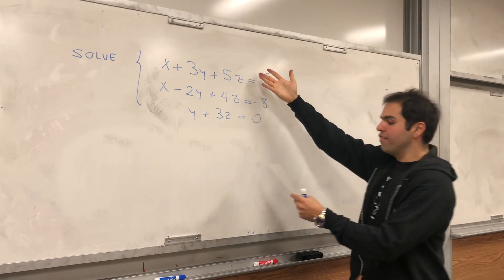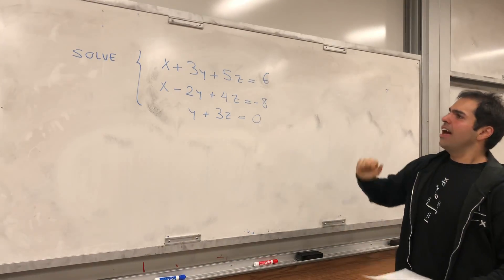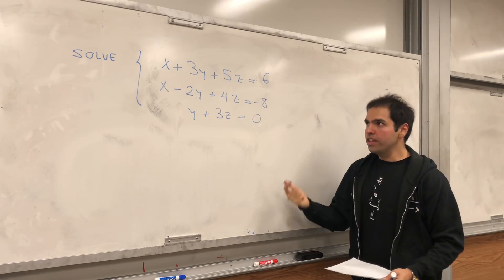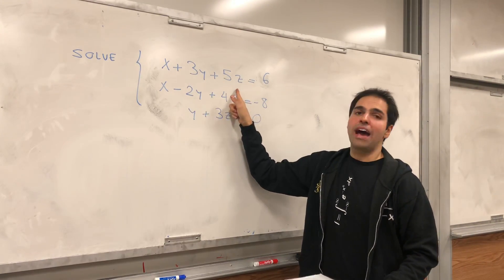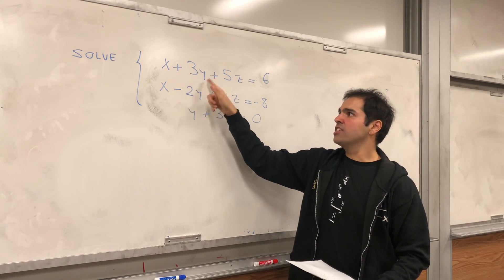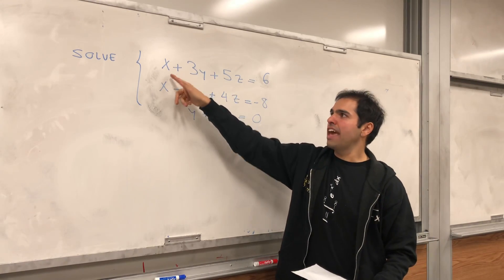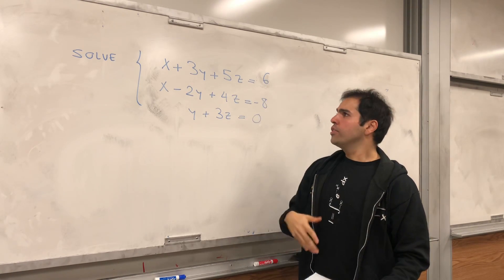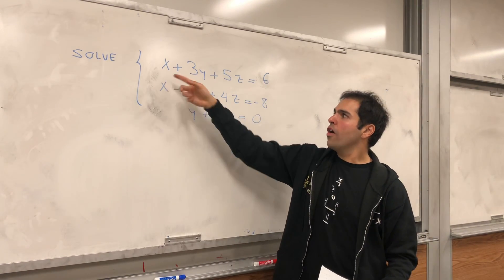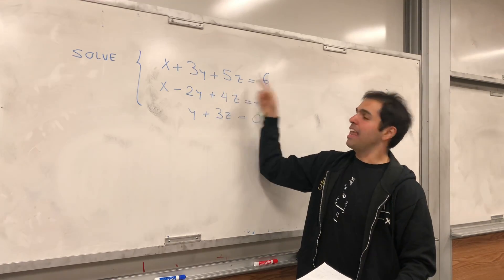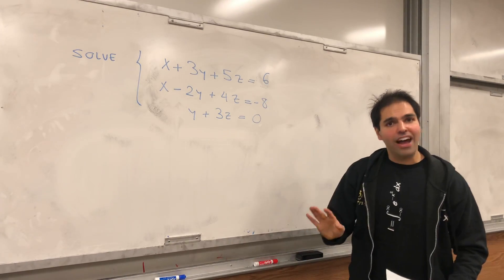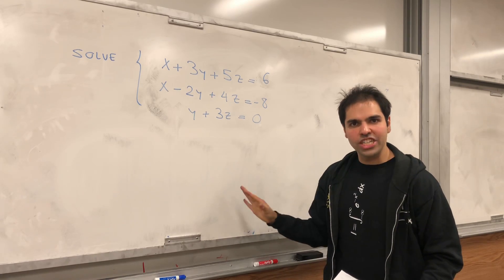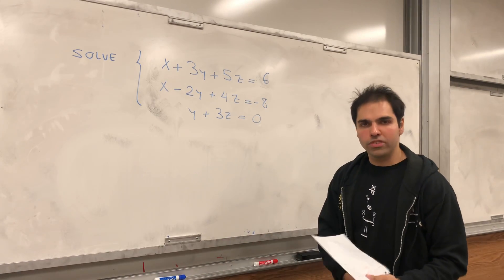So, today we will solve the following system. And one thing to notice, the names of the variables, they don't matter. You could have used x, y, z. You could have used x1, y1, x1, x2, x3. You could have even used, I don't know, heart, smiley, and banana. Okay, doesn't matter. In fact, let's do a little bit of math and magic and get rid of the variables altogether.